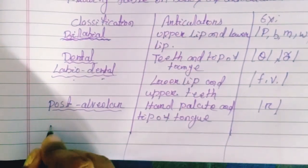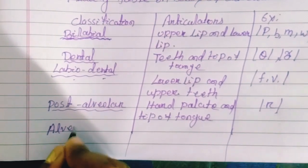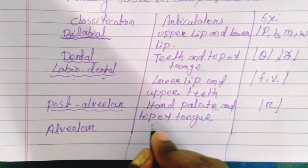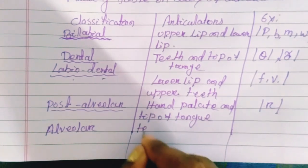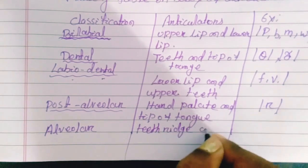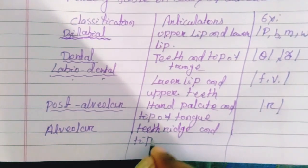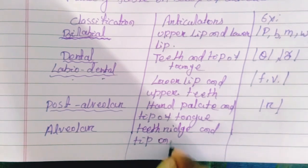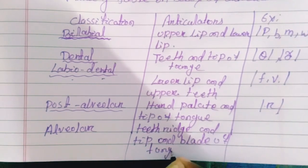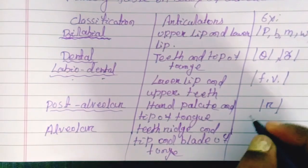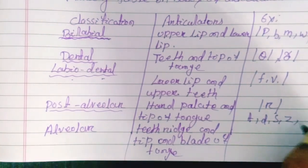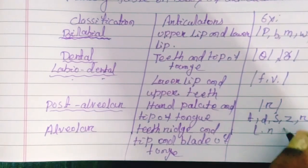Next is alveolar sound. The articulators for alveolar sounds are the teeth ridge and the blade and tip of tongue. The examples are: /t/ sound, /d/ sound, /s/ sound, /z/ sound, /r/ sound, /l/ sound, and /n/ sound.